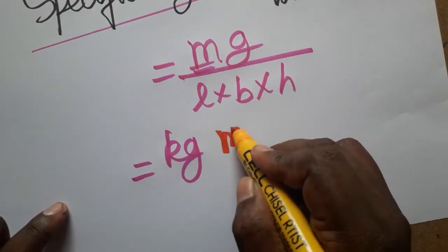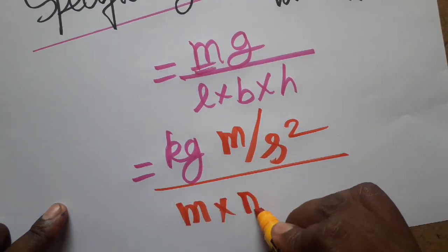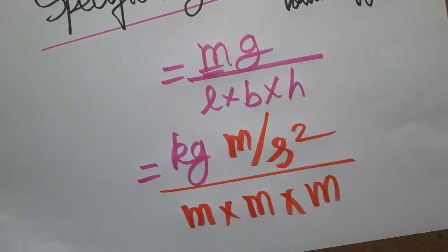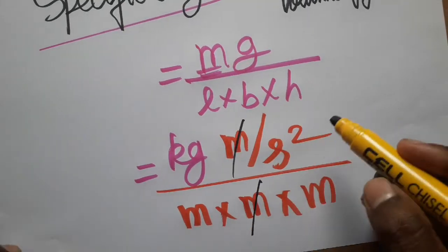Length SI unit is meter, breadth SI unit is meter, height SI unit is meter. So meter meter get cancelled.